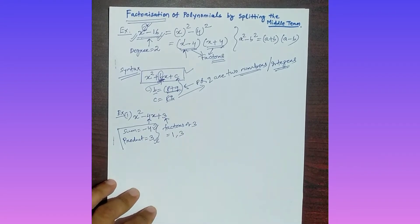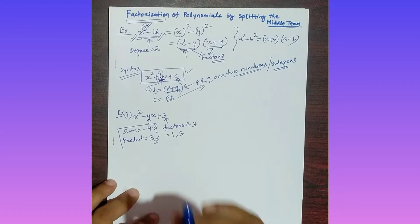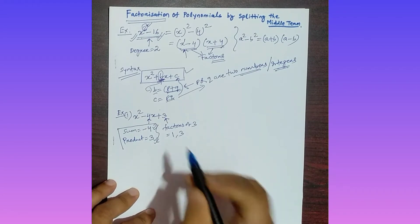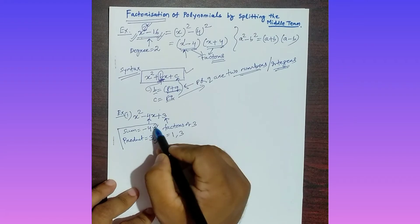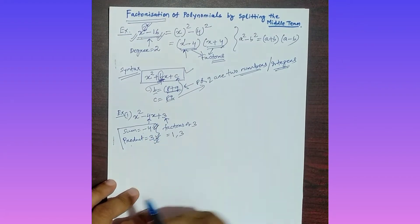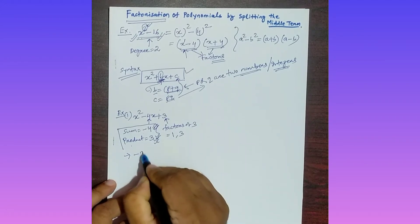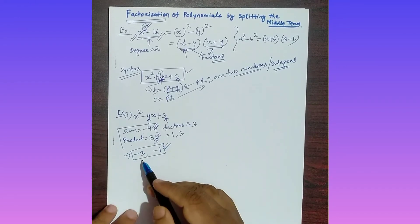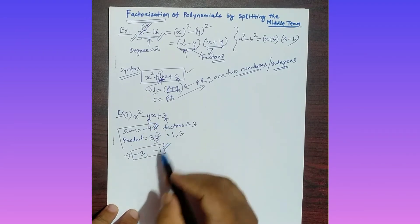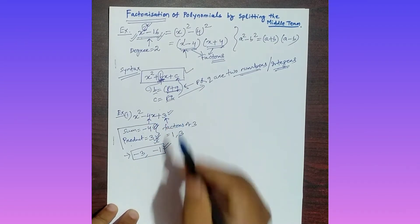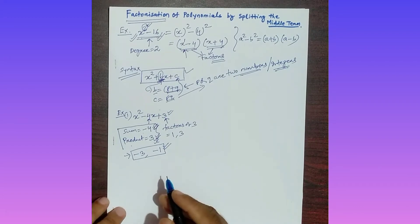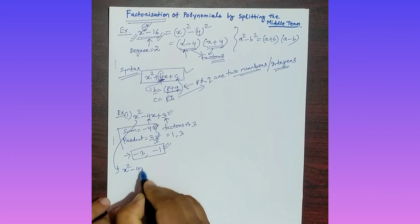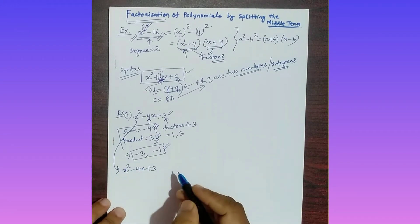The factors of 3 are 1 and 3. You have to find two numbers whose sum is -4 and whose product is +3. Those two numbers are -3 and -1: their sum is -3 + (-1) = -4, and their product is (-3) × (-1) = +3.